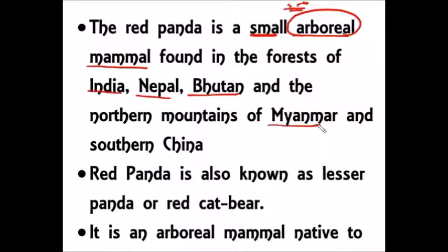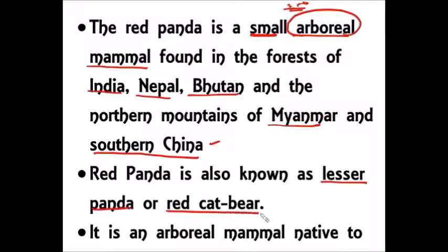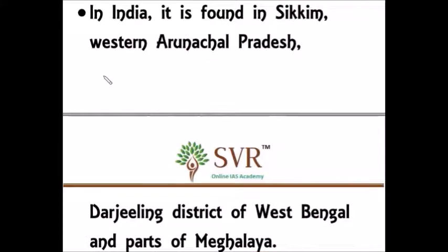Red panda is mainly found in the forests of India, Nepal, Bhutan, northern Myanmar, and southern China. The other names for the red panda are lesser panda and red cat bear. Red panda is mainly found in Sikkim.